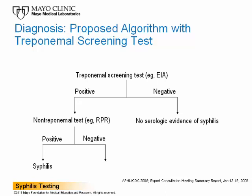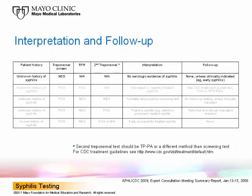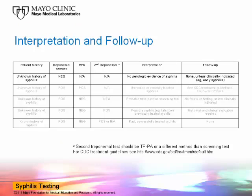In this CDC/APHL-proposed algorithm, samples that are positive by a treponemal test but negative by RPR should be tested by a second treponemal assay, such as the Treponema pallidum particle agglutination assay, or TPPA. The implementation of a second treponemal test will likely assist in the interpretation of results. Let's now walk through several common scenarios and discuss which testing is recommended and whether or not follow-up is required.